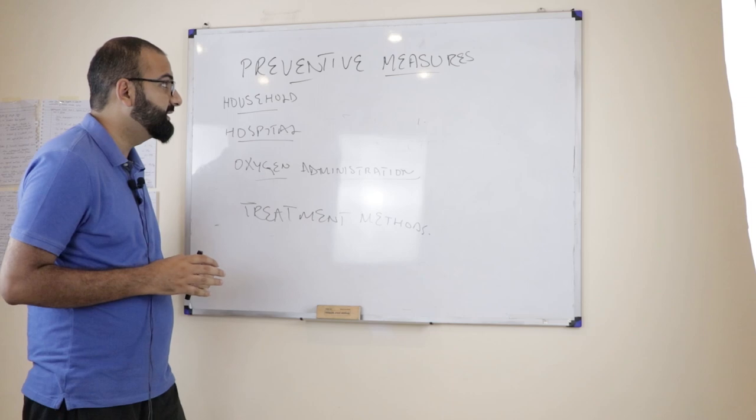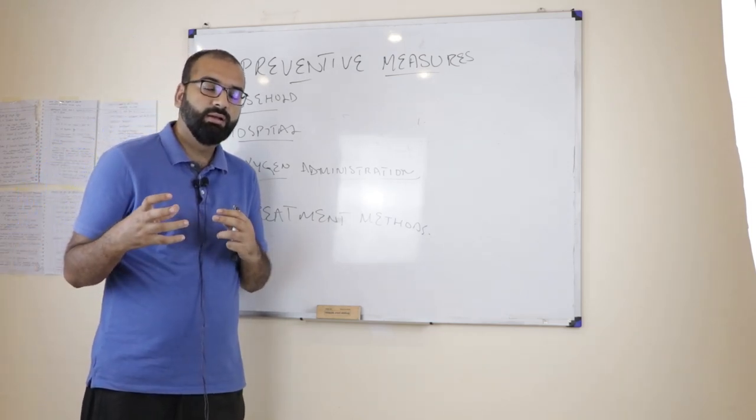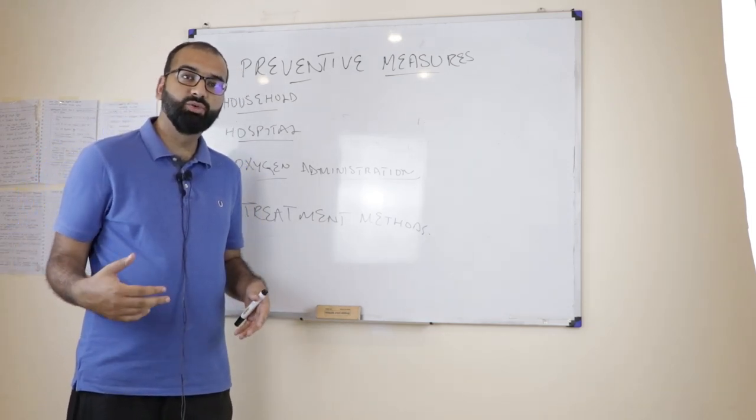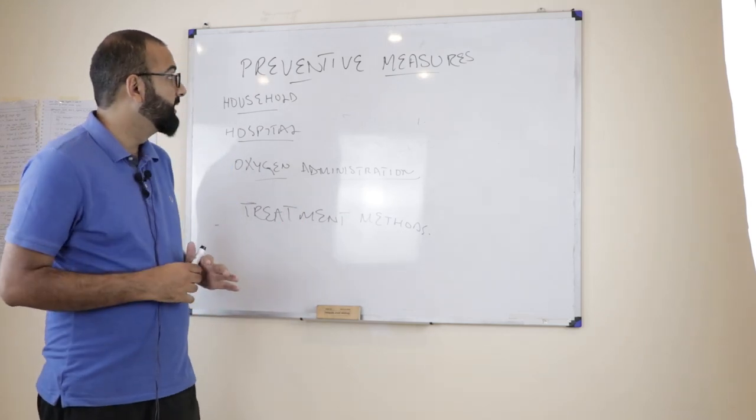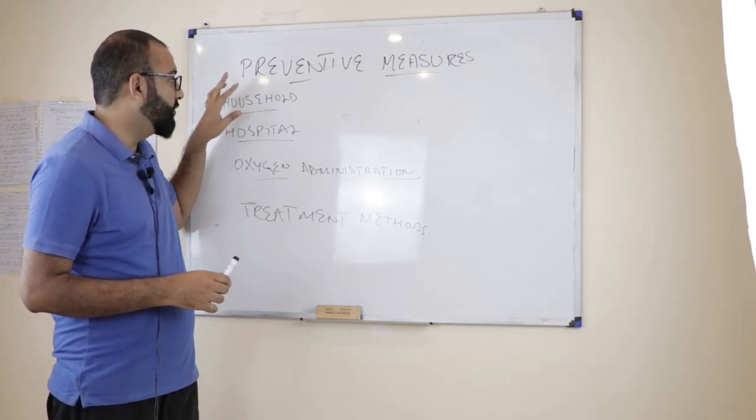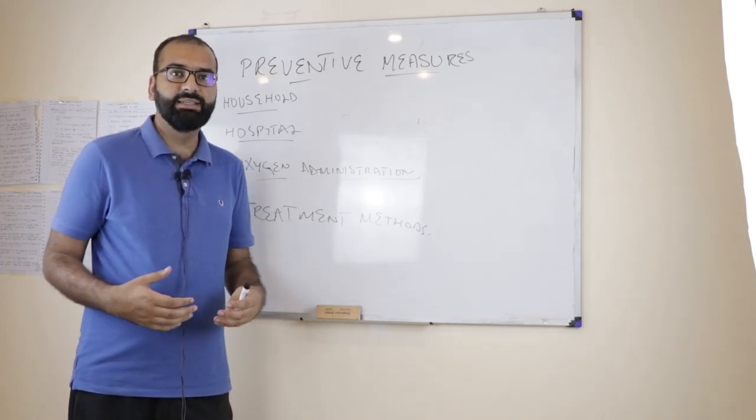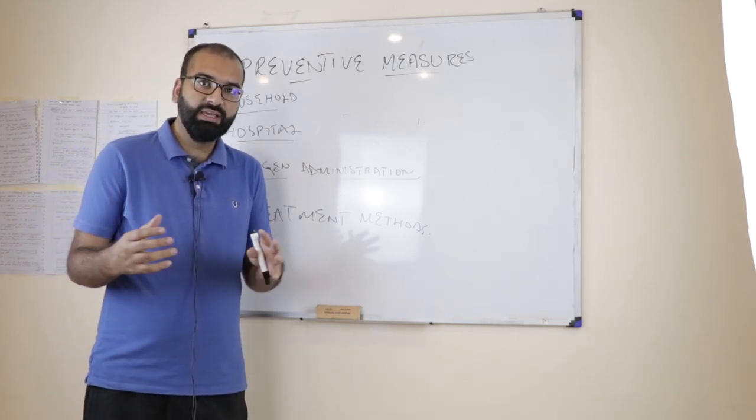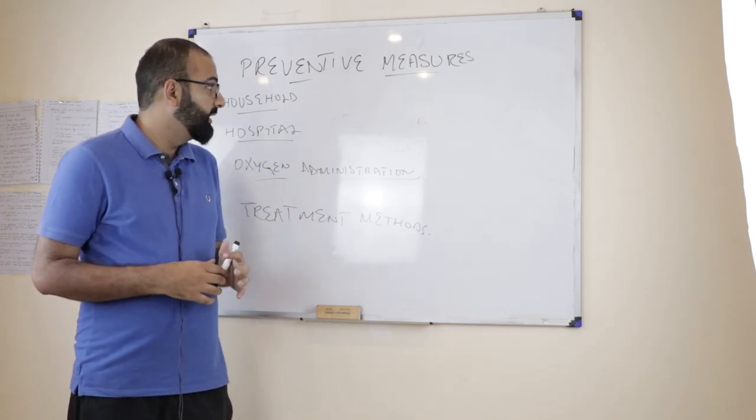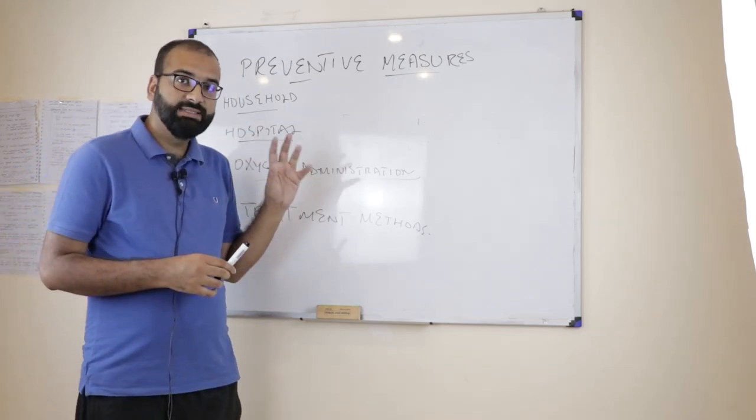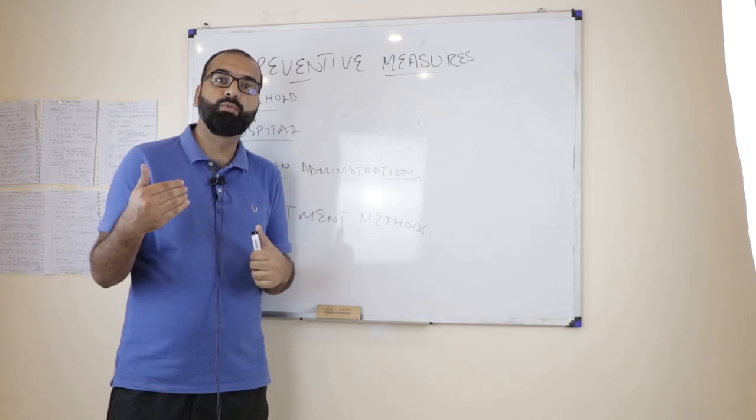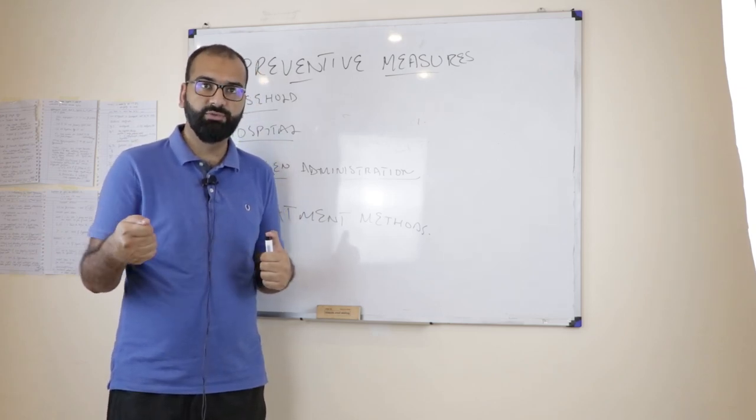There are certain preventive measures that we can take to avoid mucormycosis or black fungus from occurring. These include some household measures which include keeping your surroundings clear, always using a hand sanitizer whenever you are moving around or coming from outside and other sanitary measures that can help avoid you to get an infection in the first place.